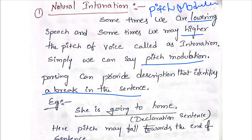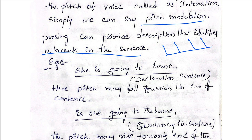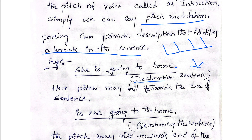Parsing can provide a description that identifies a break in the sentence based on pitch modulation — identifying where the break is in a given sentence. For example: 'She is going to home.' Here the pitch falls toward the end of the sentence, meaning we are lowering the frequency, and we call that a declarative sentence.